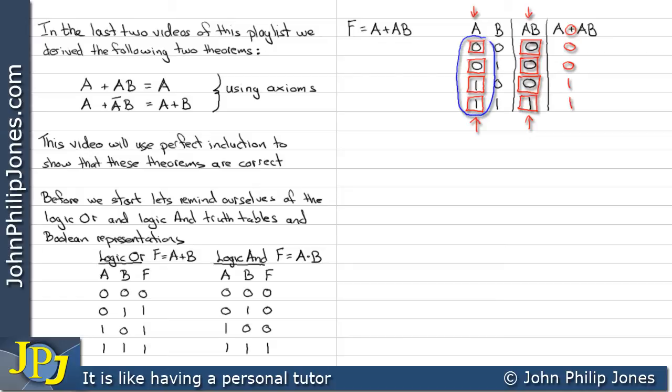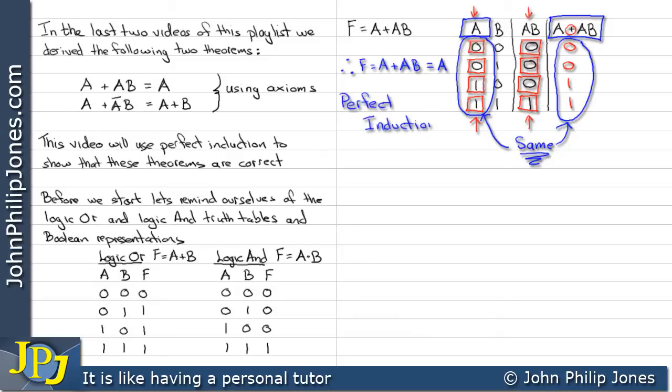If we have a look at this column and compare it to this column here, we can see that they're exactly the same. Therefore the theorem A or AB equals A because this column and this column are identical. This approach is called perfect induction.